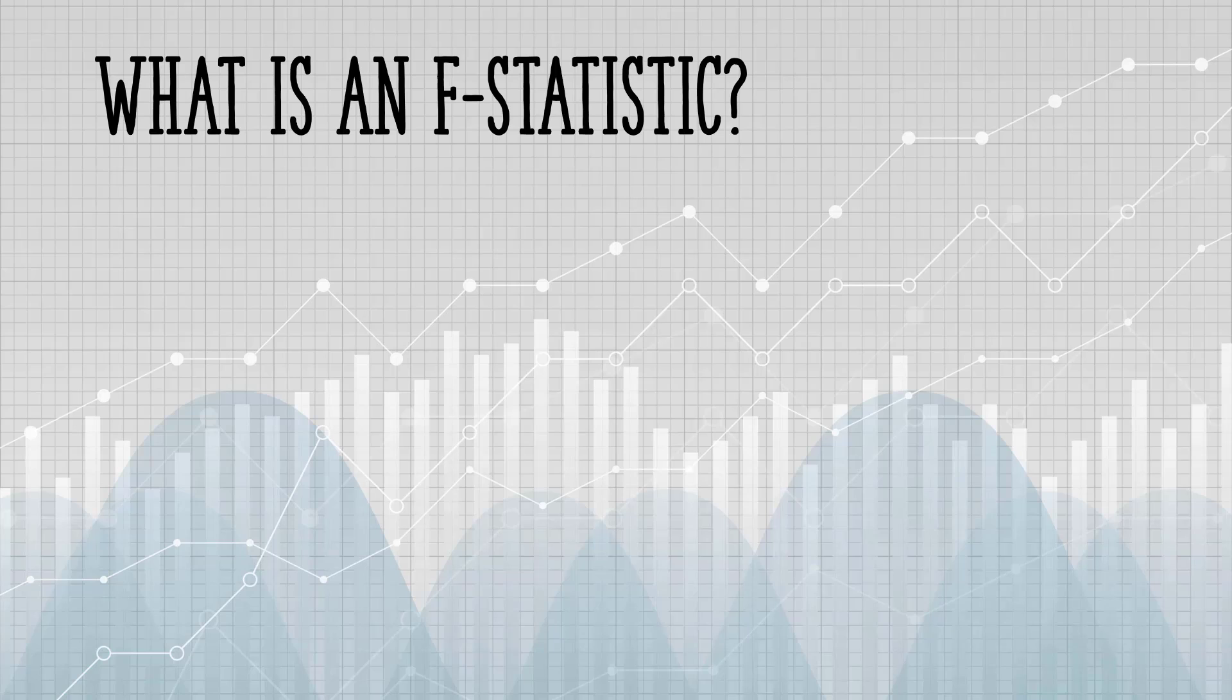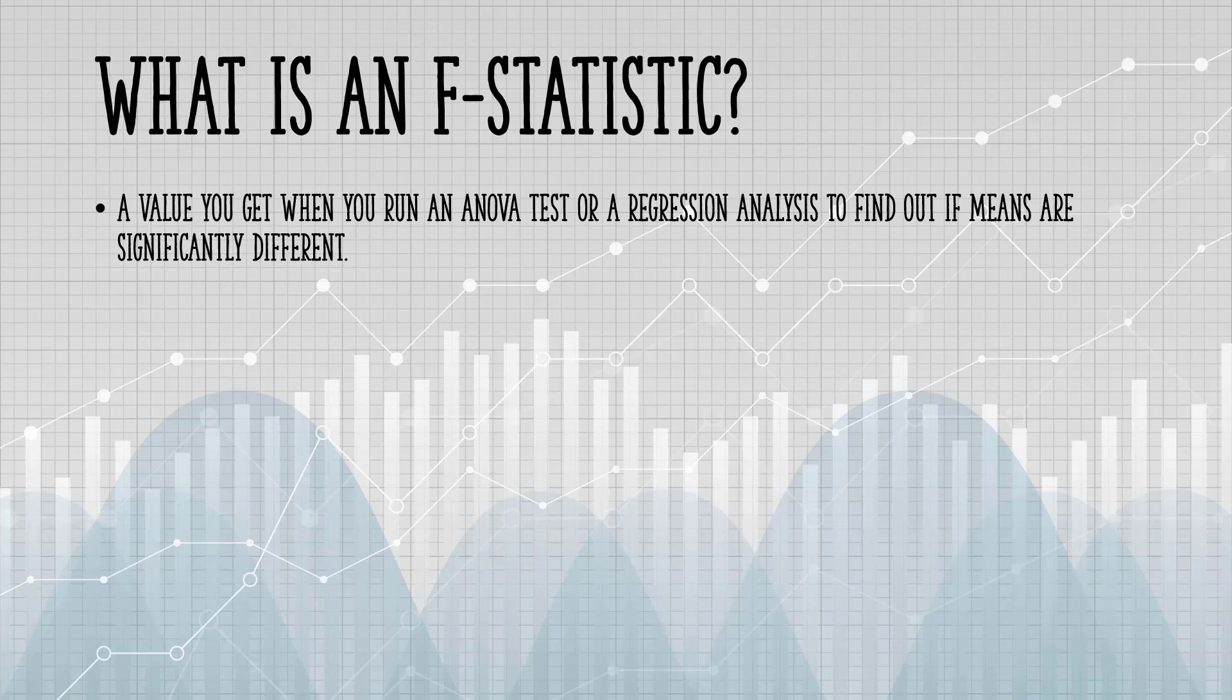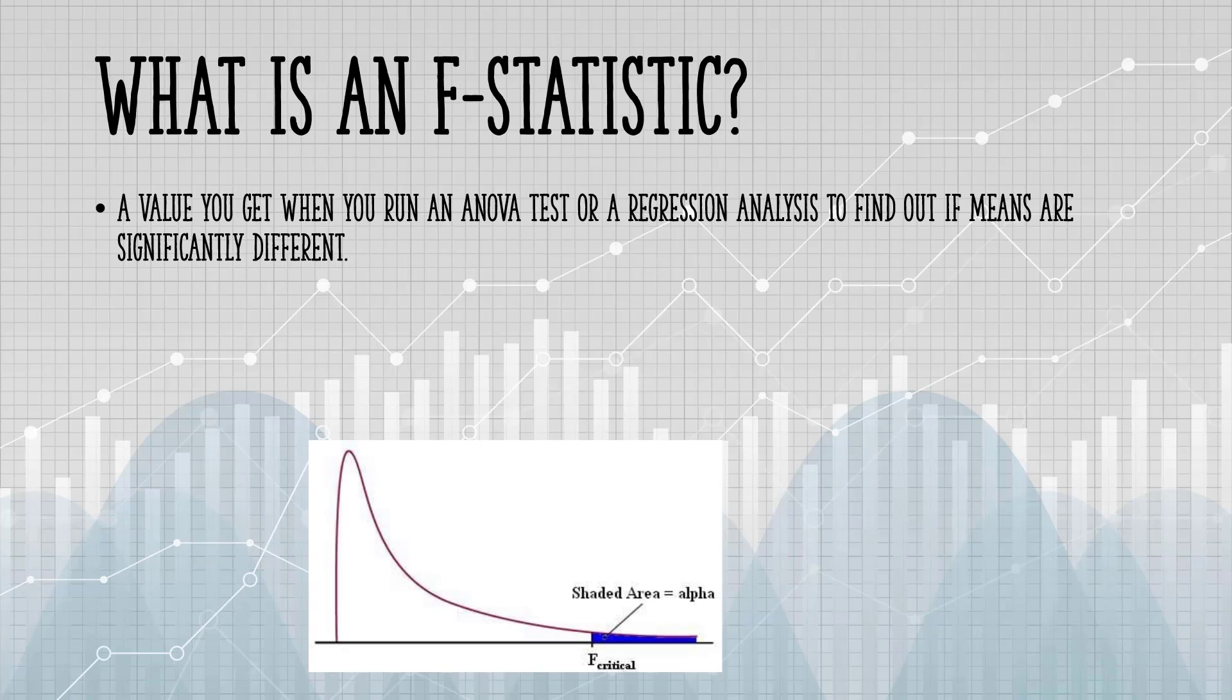An F-statistic is a value you get when you run an ANOVA test or a regression analysis to find out if means between two populations are significantly different. It's similar to a T-statistic from a T-test.